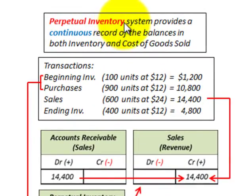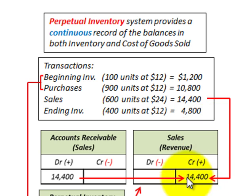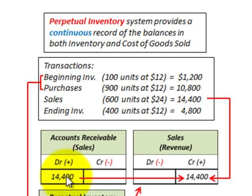Now let's analyze the perpetual inventory system through T-accounts. Remember, this provides a continuous record of balances in both the inventory account and cost of goods sold. Starting with sales: we had sales of $14,400 for the period, so we credit sales revenue for $14,400 on the income statement, and debit accounts receivable for $14,400 on the balance sheet, since goods were sold on account.